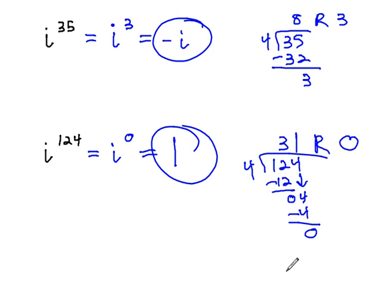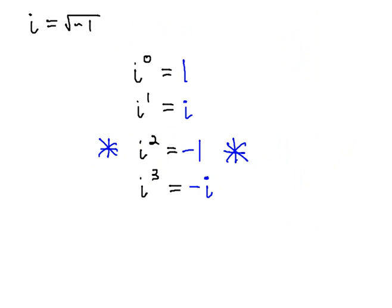By dividing the exponent by 4, and using the remainder as the new exponent, we can quickly evaluate any power of i into either 1, i, negative 1, or negative i.